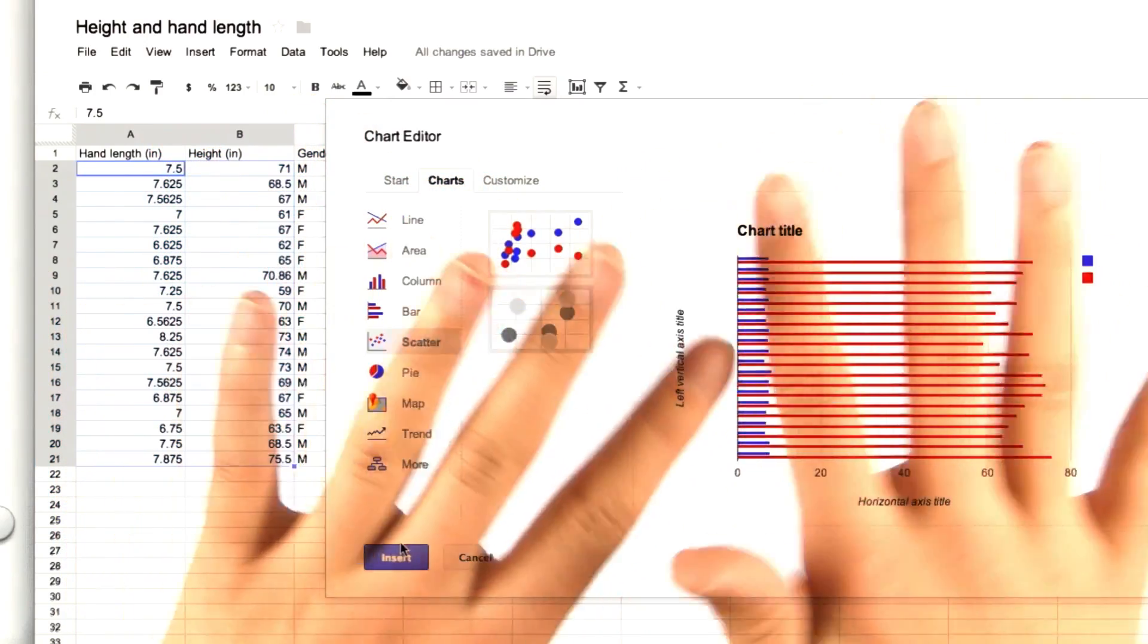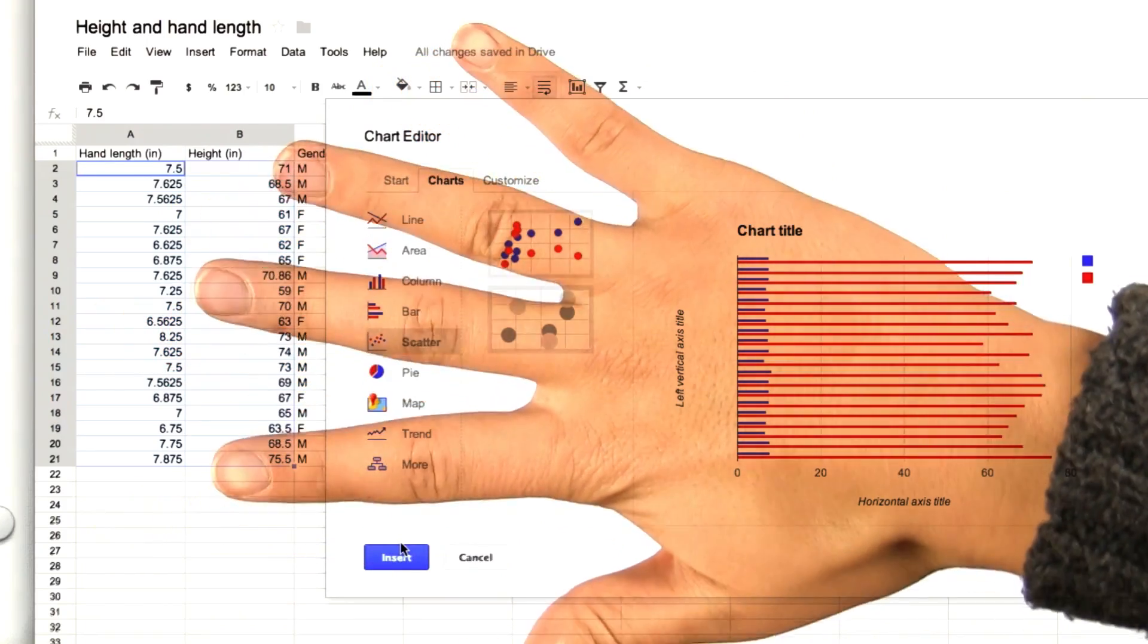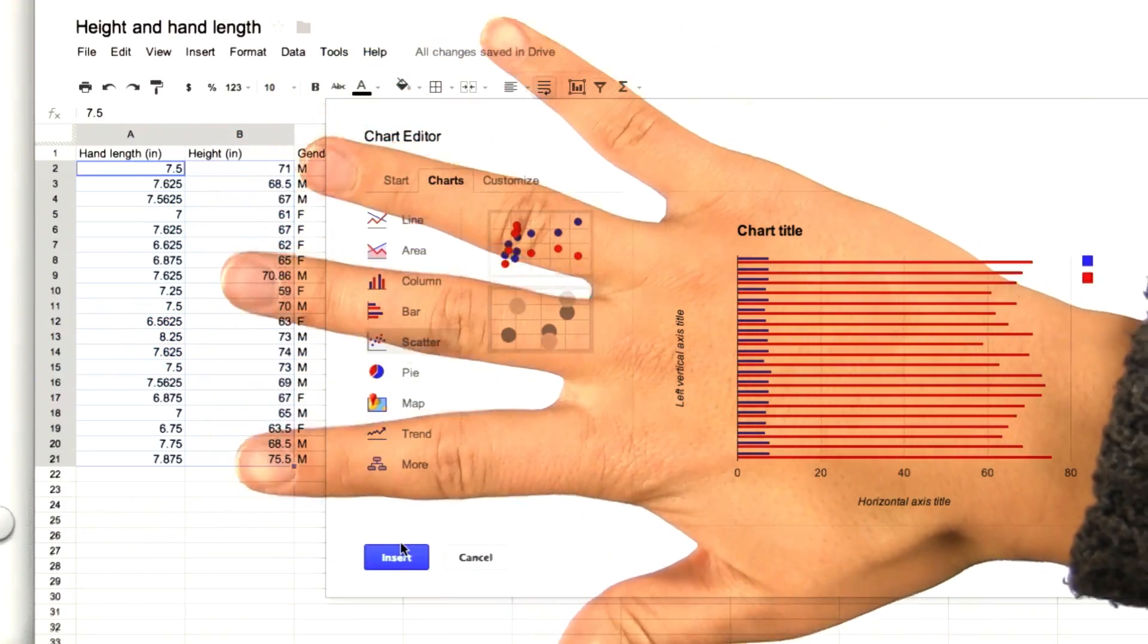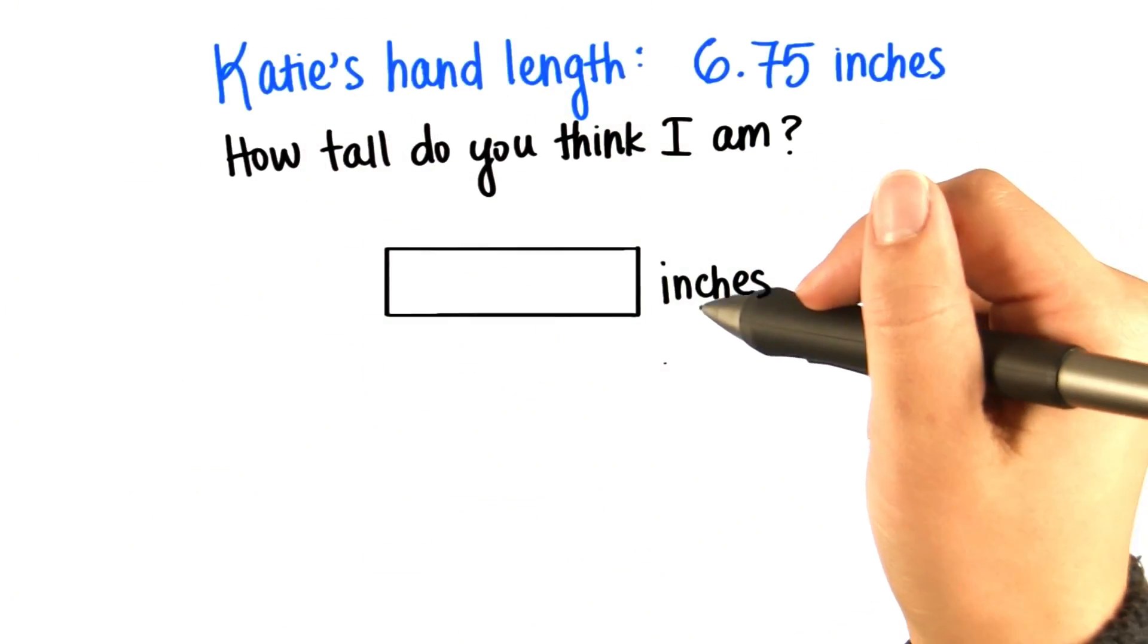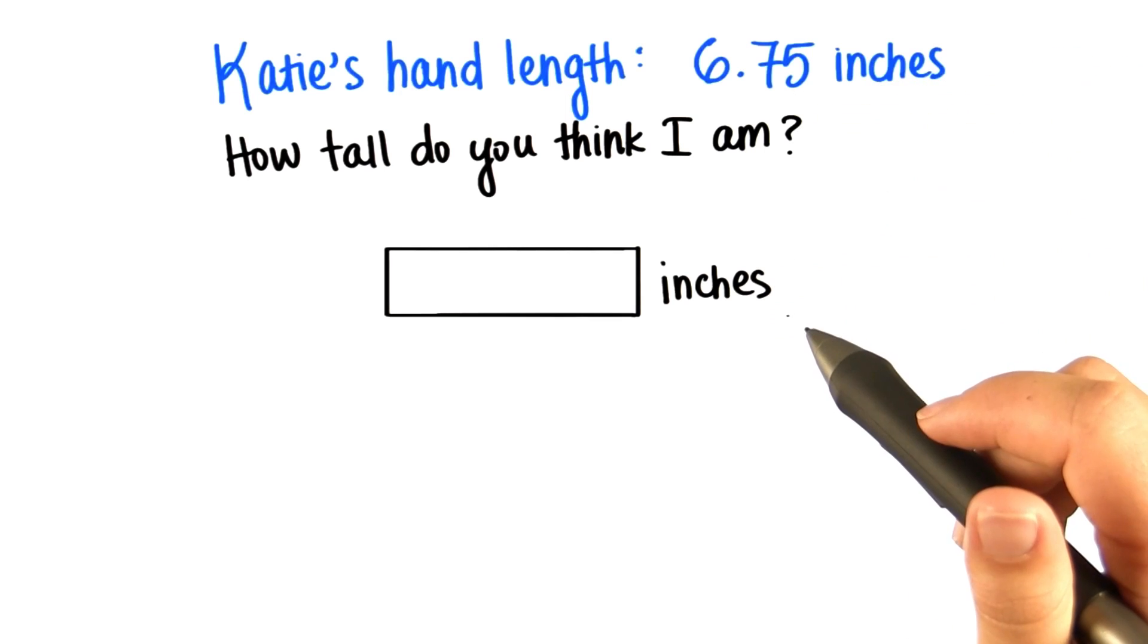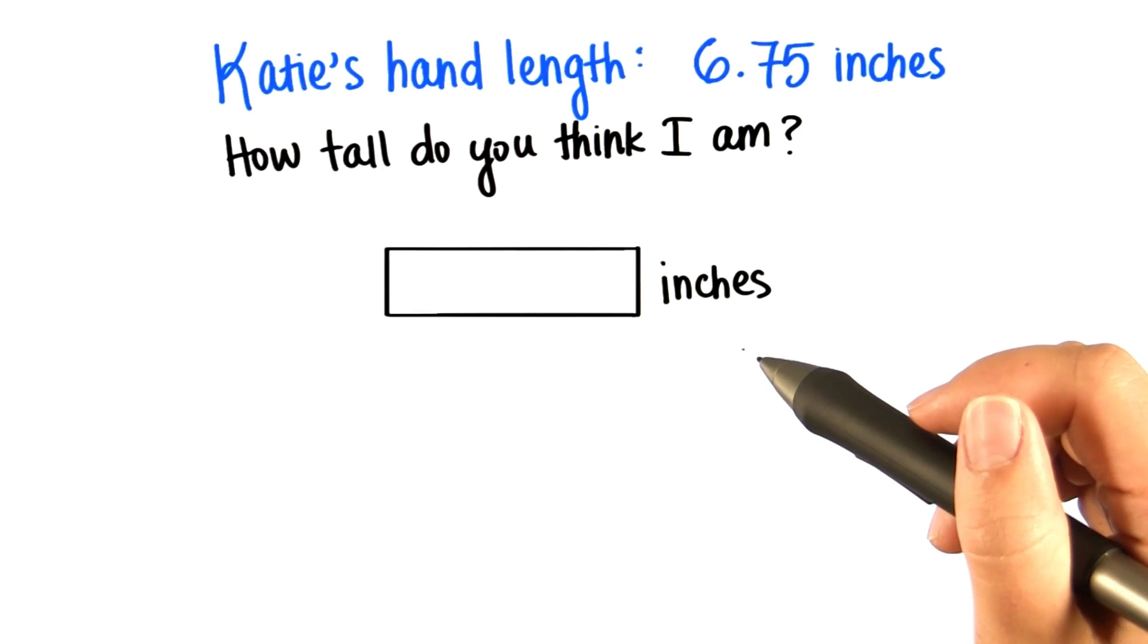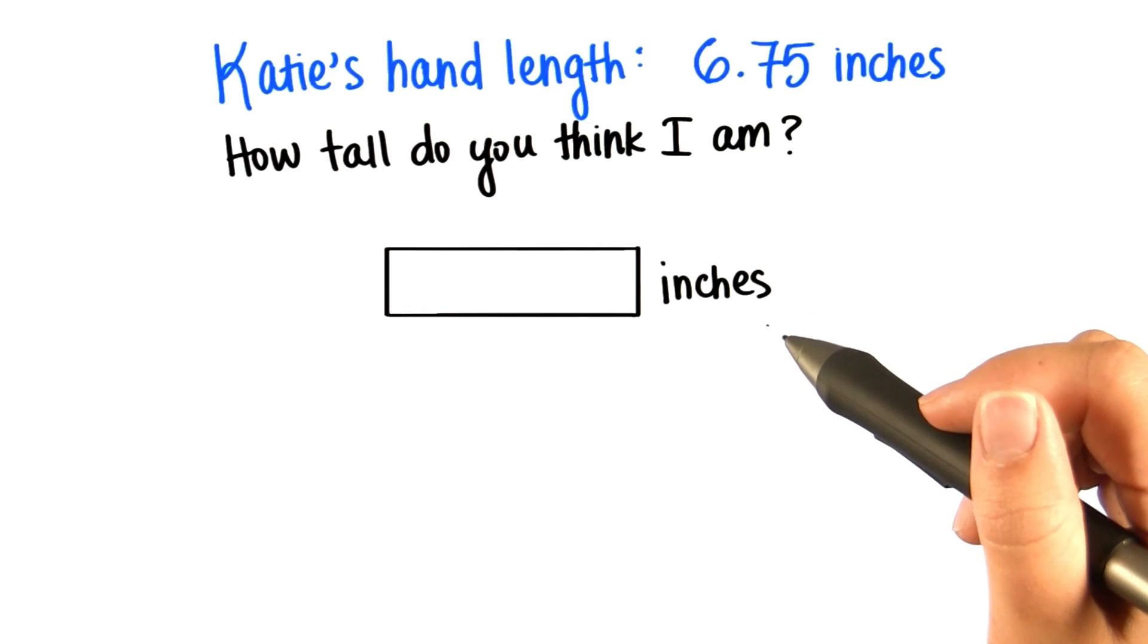Based on this scatter plot, if I tell you my hand is 6.75 inches long, how tall do you think I am? Write your answer in inches, since that's how we measured hand length. Just take a guess. This doesn't affect your grade. The purpose of this is for you to use patterns to make educated guesses.